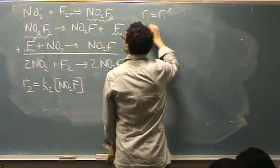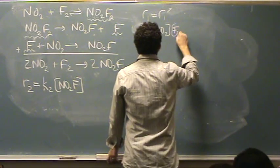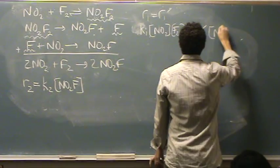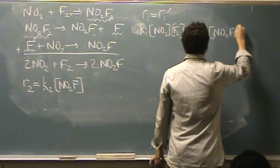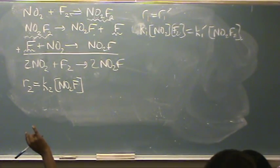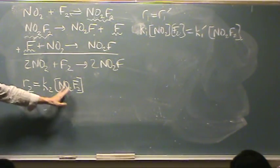K1 times NO2 times F2 equals K1 prime times NO2F2. Now I'm going to solve for that NO2F2 and plug it into my rate law.